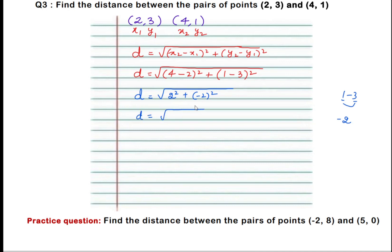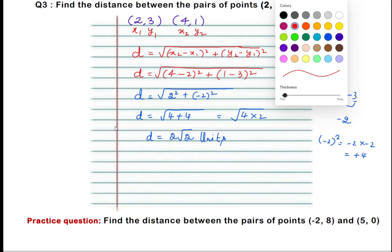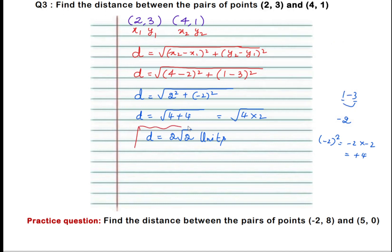d equals square root of 2 squared is 4, and minus 2 whole squared equals minus 2 into minus 2, which gives plus 4. So we have 4 plus 4, which can be written as 4 times 2. d equals square root of 8, and square root of 4 is 2, so we write it as 2 root 2 units. Therefore the distance between the two points is 2 root 2 units.